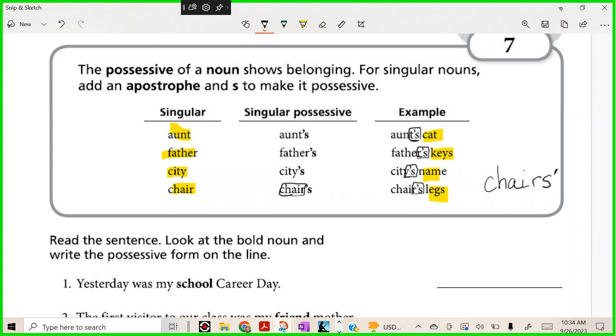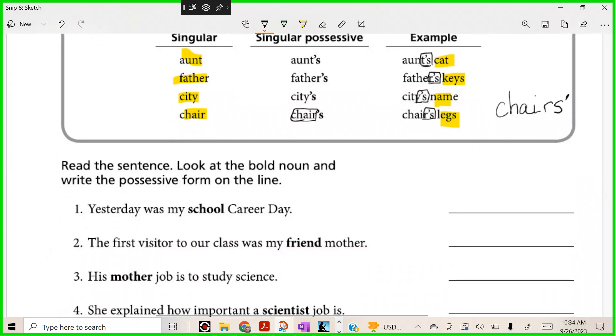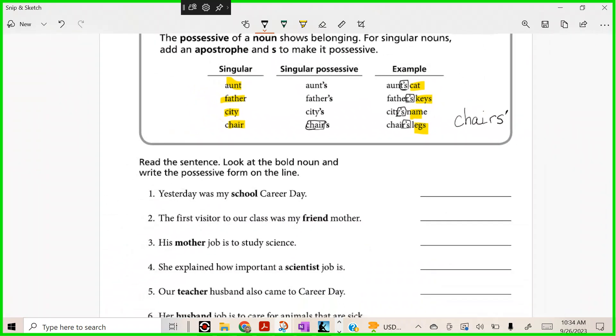Ready? Let's take a look. It says read the sentence, look at the bold noun, and write the possessive form on the line. Yesterday was my school career day. We got to fix that. What should it be? Give me the spelling, Brin.